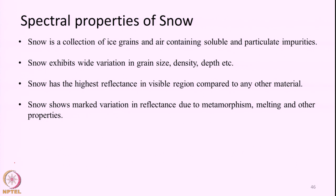The snow occurring at different places in the globe will vary a lot in grain size — how big or small the grain sizes are — the density or the packing of the snow, and the amount of contaminants present. So snow exhibits a very high amount of variability from place to place and time to time.